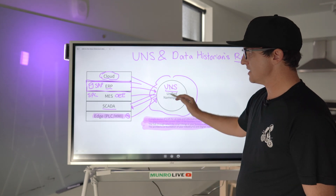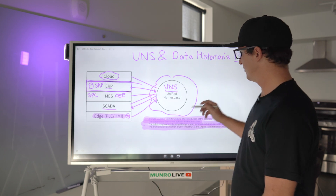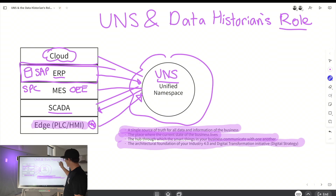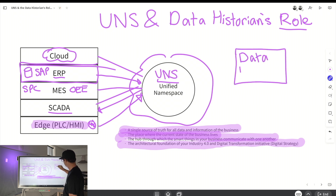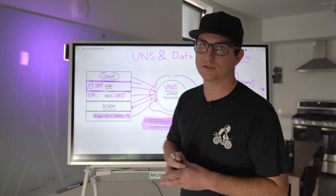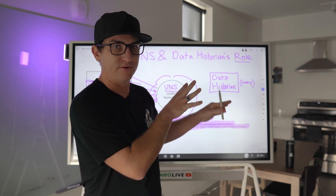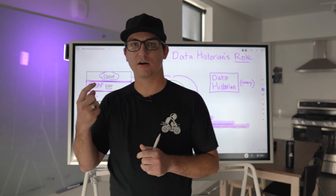The Unified Namespace is really important. Now let's go into where the historian sits. Here's our historian — and we'll say we're using Canary. Why do we like Canary? There are three reasons. Number one: it supports the IoT minimum technical requirements.